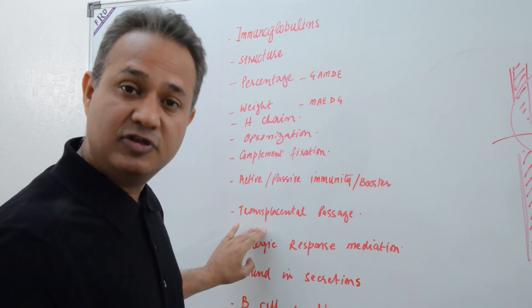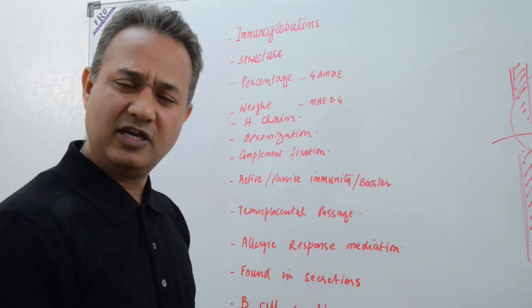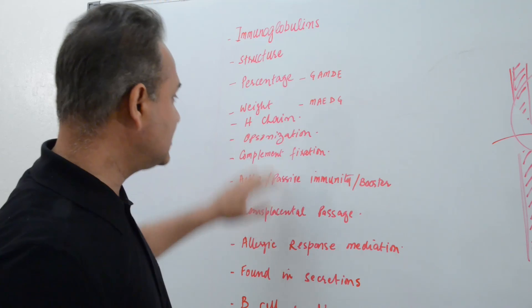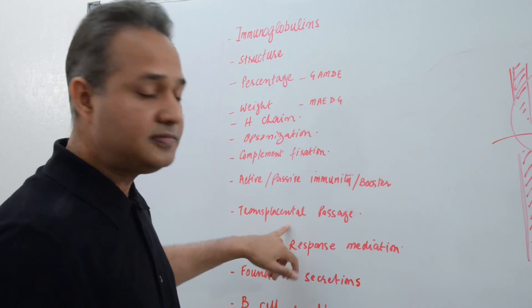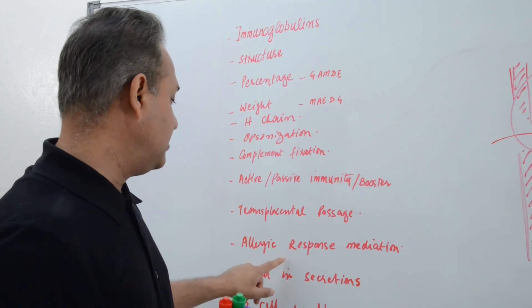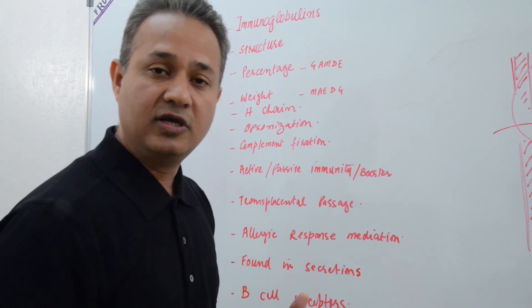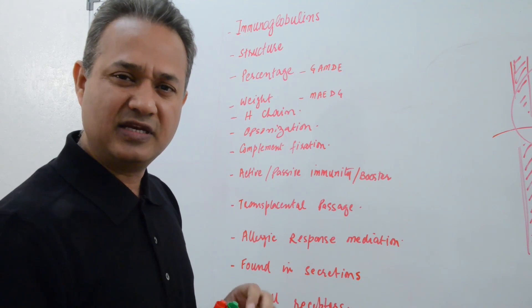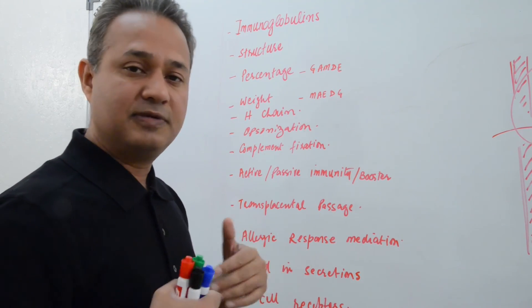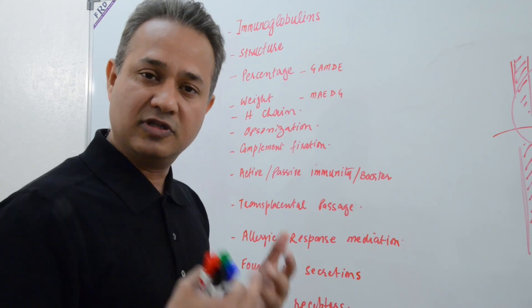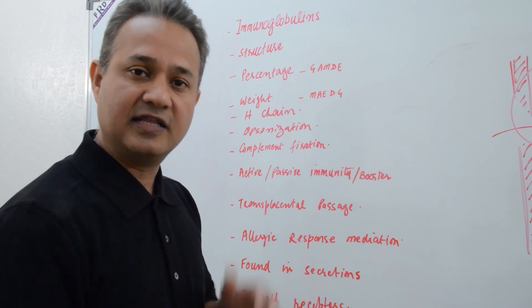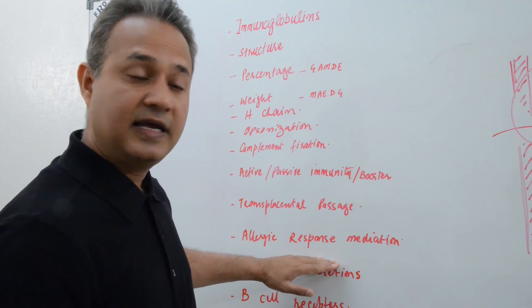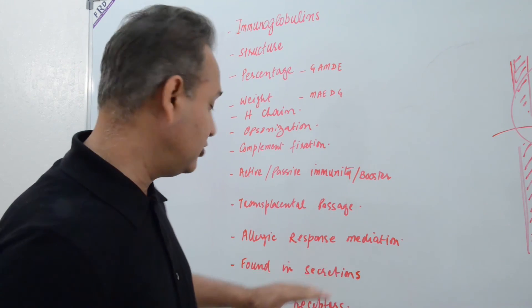Transplacental passage, which immunoglobulin goes to the - This is a very common set of questions for the USMLE, where students are asked about all of these things. Transplacental passage is very important as well, because the baby who's born doesn't make a lot of his own immunoglobulins. He makes some IgM and A, but very minor. So primarily, he's getting the immunoglobulins from the mother, the ones that had crossed the placenta, and the ones that are present in colostrum or mother's milk.